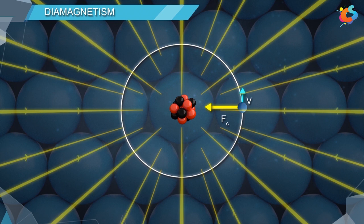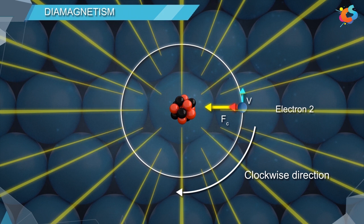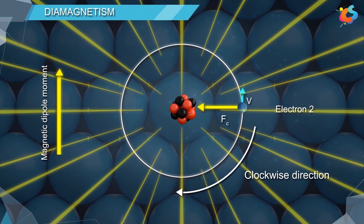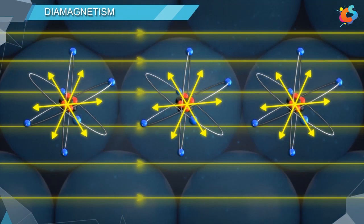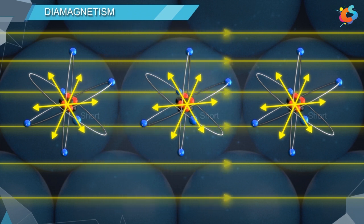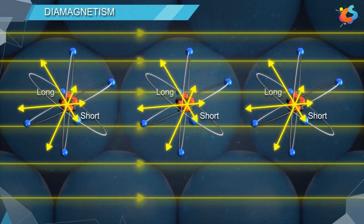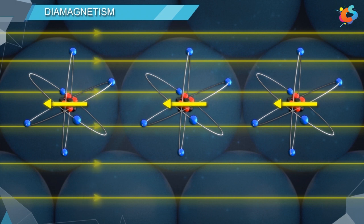On the other hand, for an electron moving in the clockwise direction, the Lorentz force is radially inward. Since both forces act on the same line in the same direction, the effective centripetal force increases. Due to this, the velocity increases, and the magnetic dipole moment of the electron increases. Similarly, all the electrons in various orbits experience a change in magnetic moment — some become smaller and some become larger. Due to this, the atom develops a net magnetic moment in the direction opposite to that of the applied field.